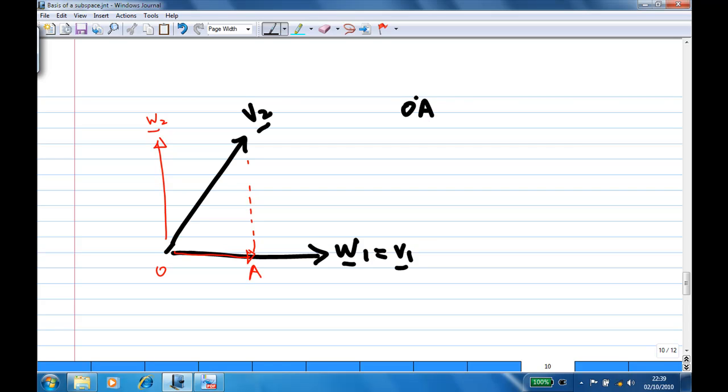OA, in this case, is in the direction of w1. So the unit vector of w1 is w1 over the length of w1. And then, what about the length of OA?